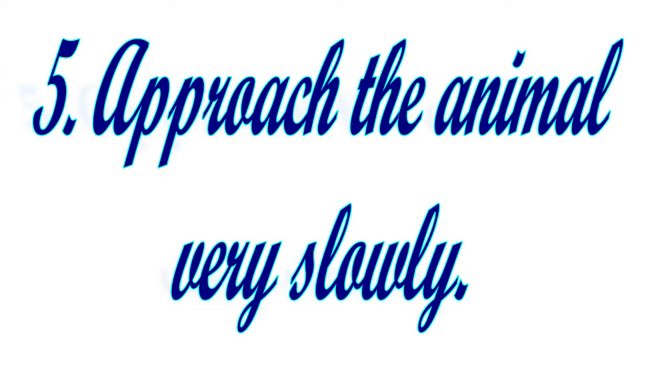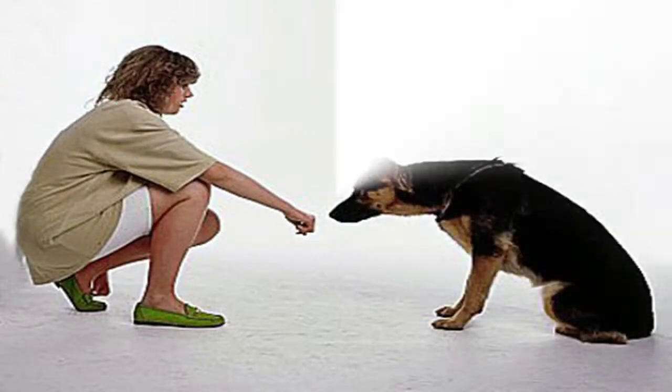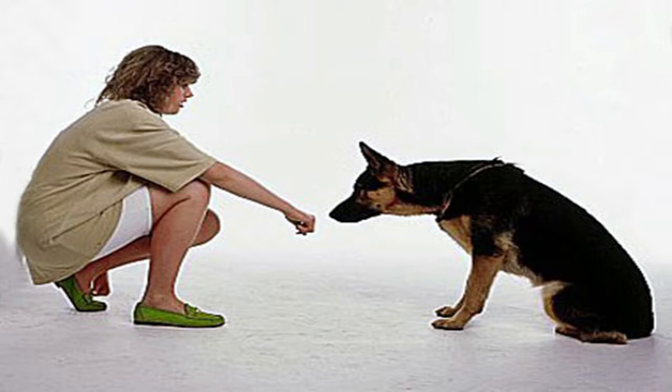Approach the animal very slowly. If you have gotten the dog's attention, approach very slowly, ideally from a crouching position so as to appear smaller than you are. This technique can help make you appear less intimidating to the animal. Do not get down on your hands and knees, as this will make it harder for you to get away if the animal decides to attack. Only come within 10–15 feet (3.0–4.6 m) of the animal.